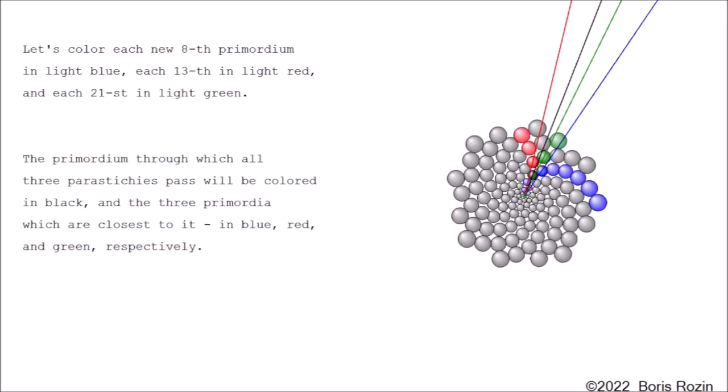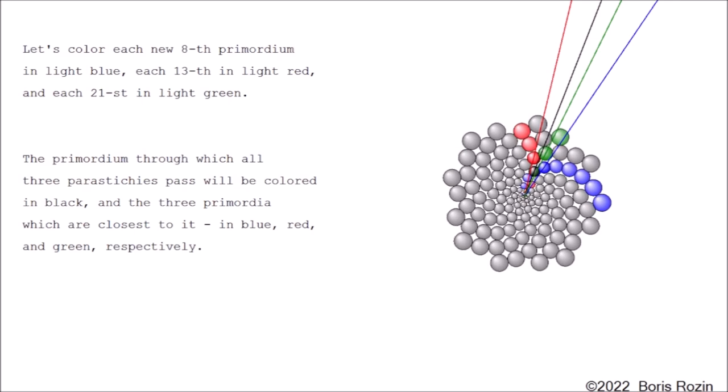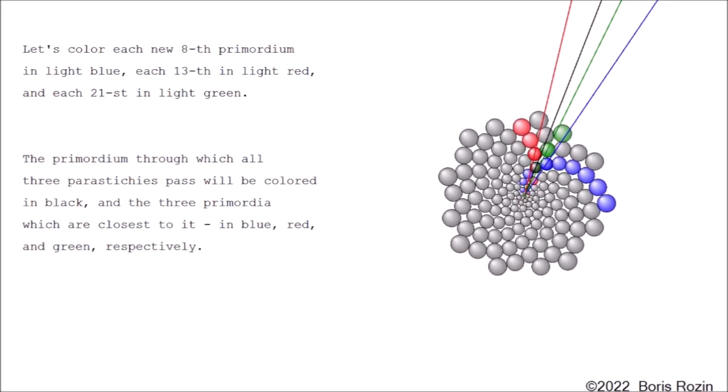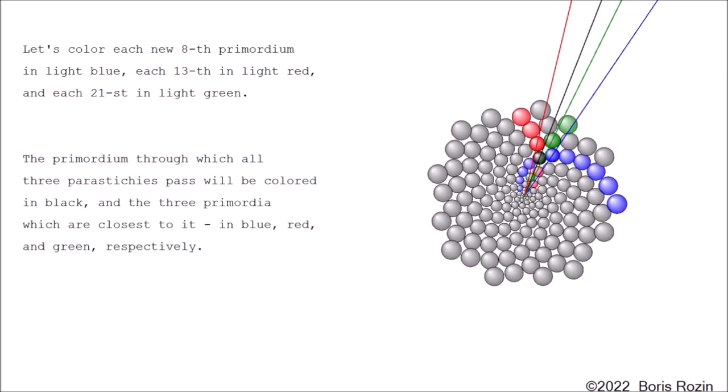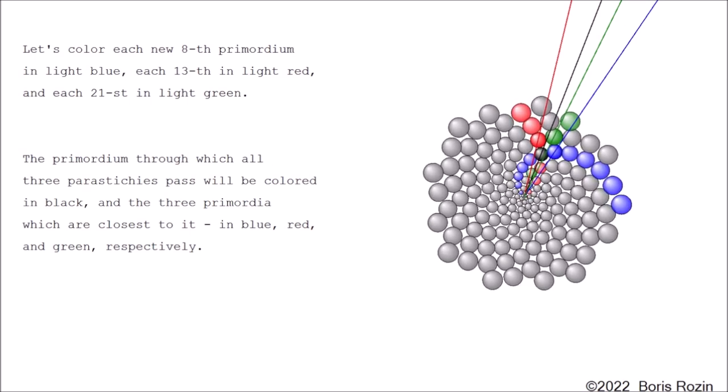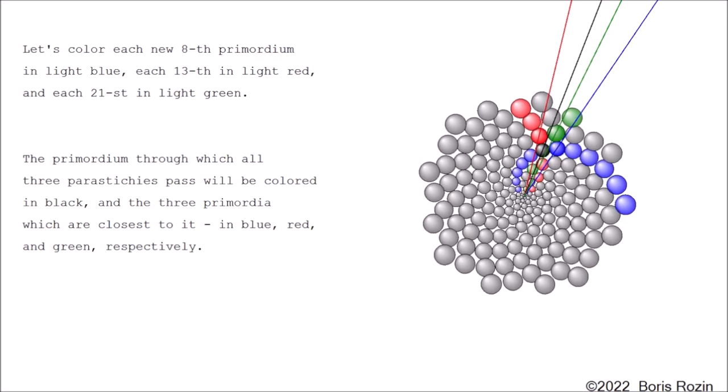Let's color each new eighth primordium in light blue, each thirteenth in light red, and each twenty-first in light green. The primordium through which all three parastichies pass will be colored in black, and the three primordia which are closest to it in blue, red, and green, respectively.